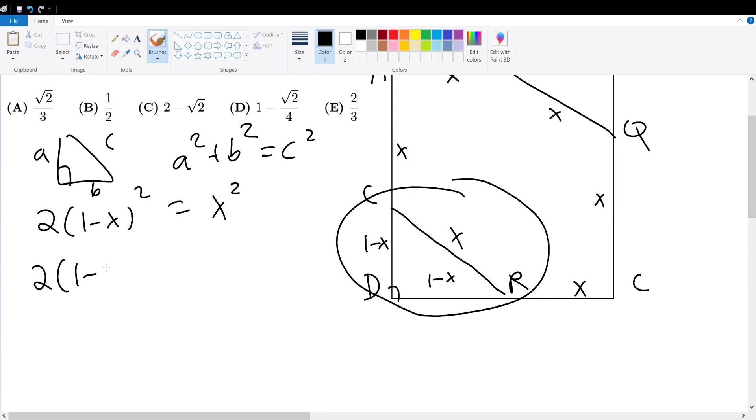Expand. 2 of (1 minus 2X plus X squared) gives X squared, which is 2 minus 4X plus 2X squared gives X squared. Minus X squared on both sides. 2 minus 4X plus X squared gives 0.